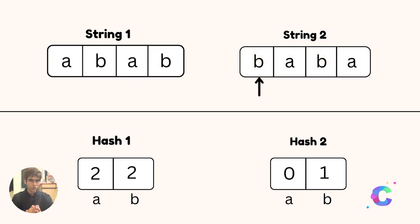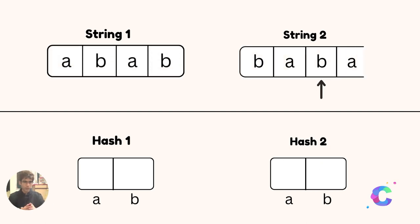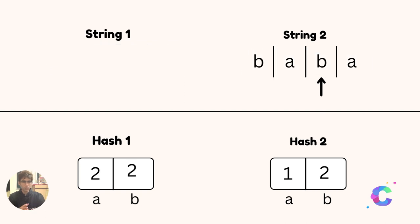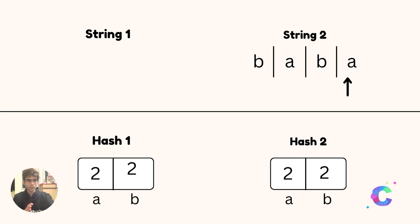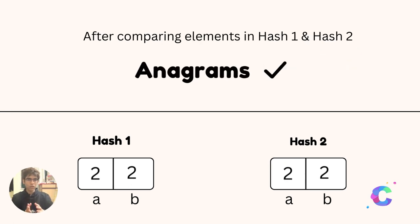Similarly for string2, we increment the counter of B in hash2 table from 0 to 1. The second element is A, so we increment the counter of A to 1. The third element is B, so we increment the counter of B in hash2 table. The last element is A and we increment the counter to 2. As you can see, both the hash tables contain the same elements, so we can say that both the strings are anagrams of each other. This is a way to how you can solve through hash tables.